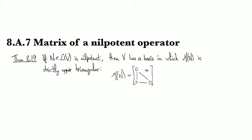So now we have the last result for this chapter, which is that if we have a nilpotent operator, then V has a basis for which the matrix is strictly upper triangular.